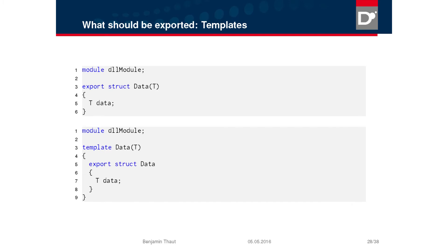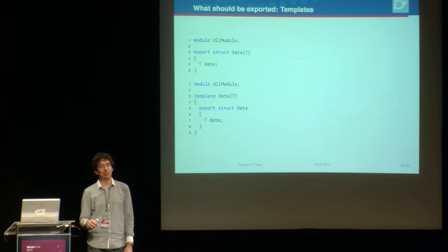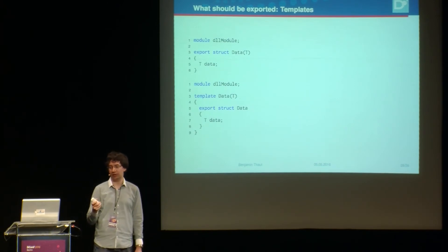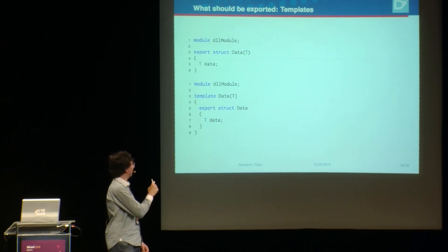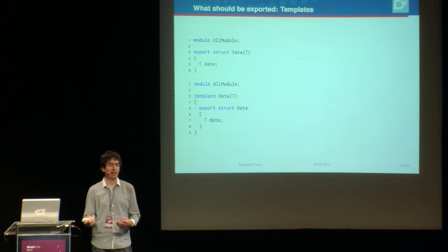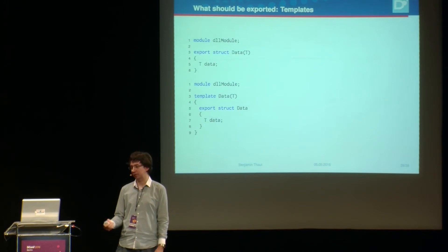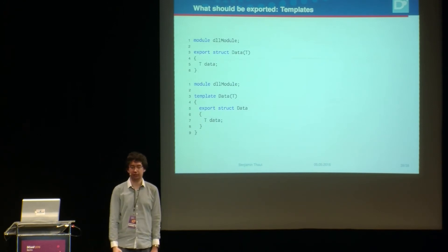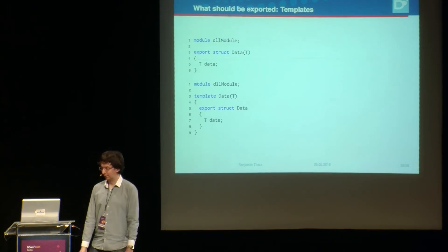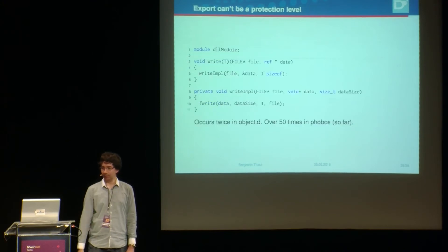It also makes sense to put `export` on templates. Although a template is instantiated on the user side, DMD has logic where it won't re-instantiate a template if it knows it has already been instantiated elsewhere. So if the template is in your DLL, you need to export the instantiation, otherwise the user gets unresolved external symbol errors — unless they pass the `-instantiate-all` flag, which is more or less a hack.